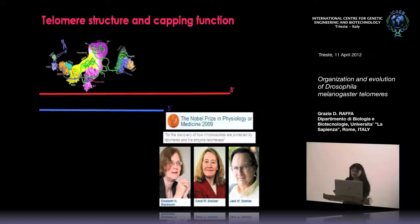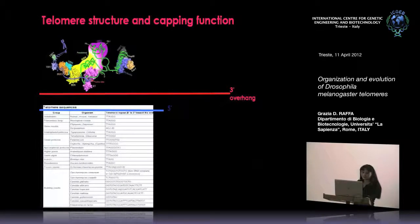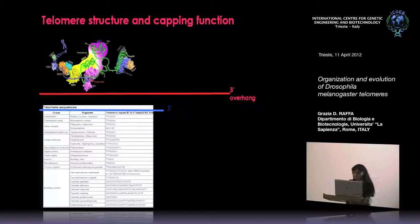Some 60 years later, another Nobel Prize was awarded for understanding how chromosomes are protected by telomeres and the enzyme telomerase. Chromosomes have to solve the end replication problem, which is the natural loss of sequences at their ends at each replication cycle. This is achieved through the enzyme telomerase, which adds repeats copied by reverse transcription from its RNA template, which is species-specific.